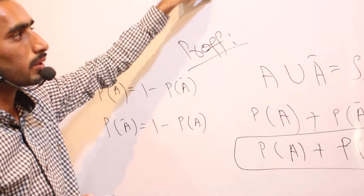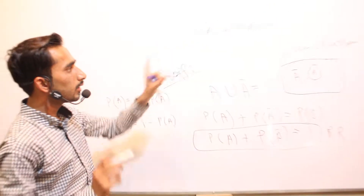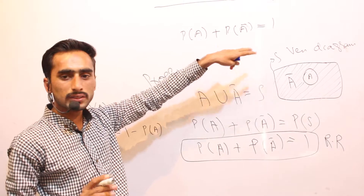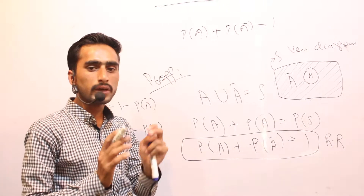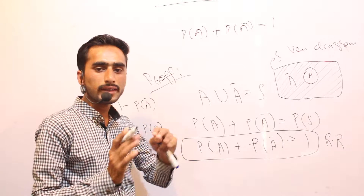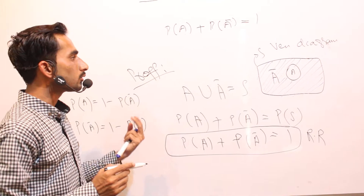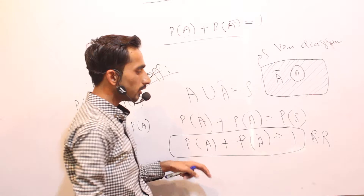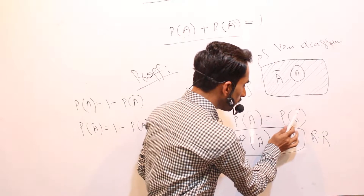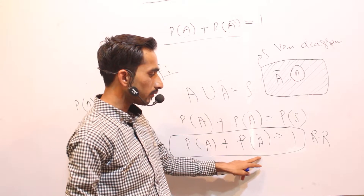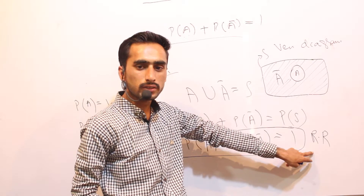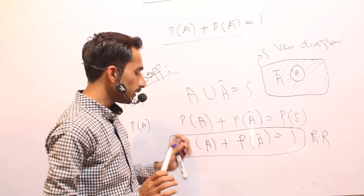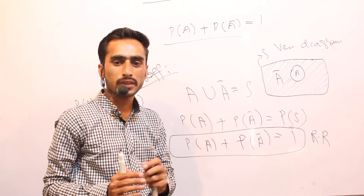So in summary, if event A and A-bar are defined in a sample space where A-bar is not equal to A, then A-bar is the complementary event of A. The theorem is that probability of A plus probability of A-bar equals one, which is our required result. I hope it's clear to you. Please do like, share, and subscribe for more videos. Thank you very much.